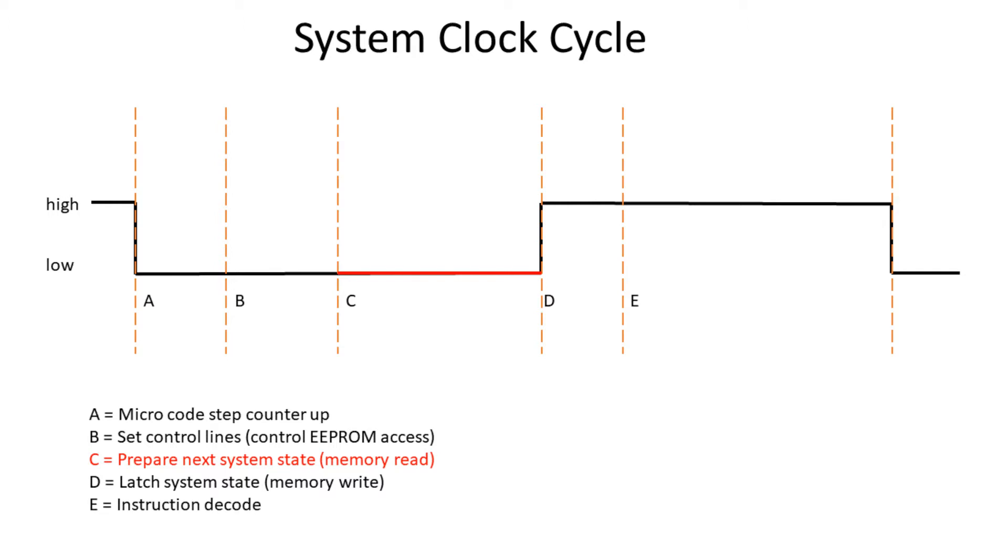The high phase is divided into the latch of the system state. So that is all that was prepared in the step ahead. So that all the registers get their values or when the memory write was requested that the byte is written into memory. And the last phase is the instruction decode. So that if a new instruction was latched, that instruction will be translated to an address in the microcode EEPROMs.